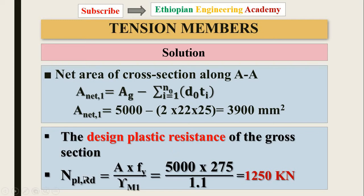The design plastic resistance of the gross section equals the gross area times the yield strength divided by the partial safety factor γM0: Npl,Rd = 5000 × 275 / 1.1 = 1250 kN. This is the design plastic resistance of the steel bar.